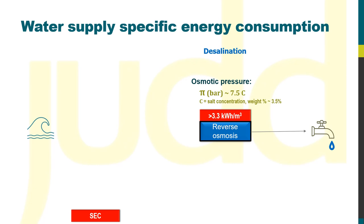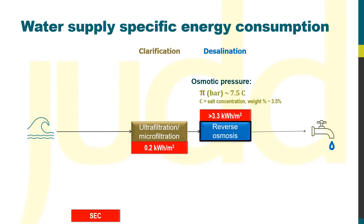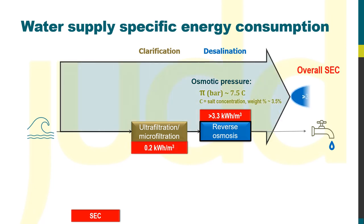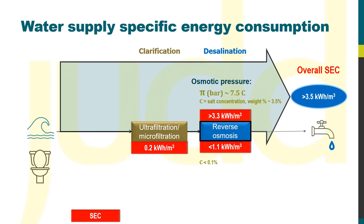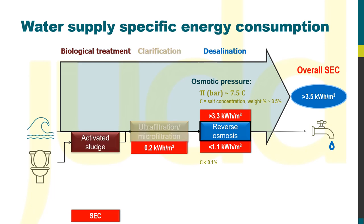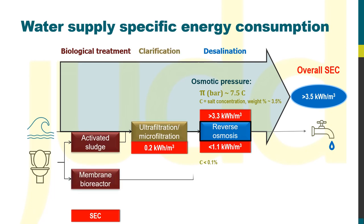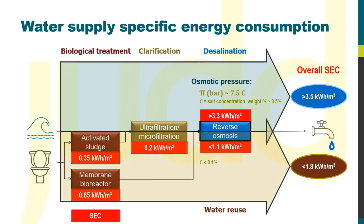Adding the SEC for the clarification pre-treatment, normally by membrane filtration, gives an overall SEC of about 3.5 kWh per metre cubed. On the other hand, municipal wastewater is much less saline — less than 0.1% normally — which equates to a desalination SEC of around 1.1 kWh per metre cubed or less. Biological pre-treatment by conventional activated sludge followed by membrane filtration, or by MBR technology, demands relatively little energy, giving a total SEC of below 1.8 kWh per metre cubed.